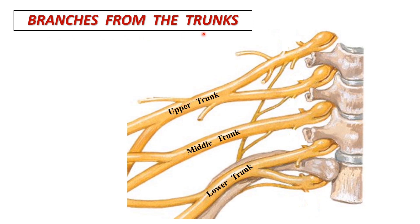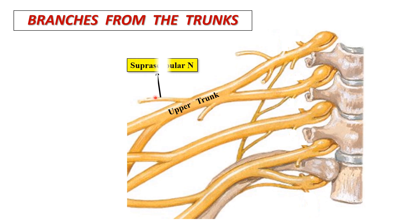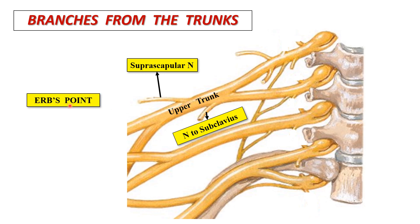Branches from the trunks: out of the three trunks of the brachial plexus, only the upper trunk gives rise to two branches — the suprascapular nerve and the nerve to the subclavius muscle. The upper trunk is also known as Erb's point, where six nerves meet: C5 and C6 roots unite, anterior and posterior divisions are formed, and two branches of the upper trunk are given off.